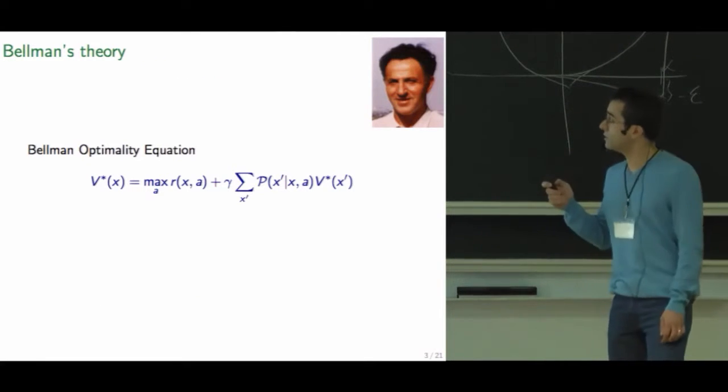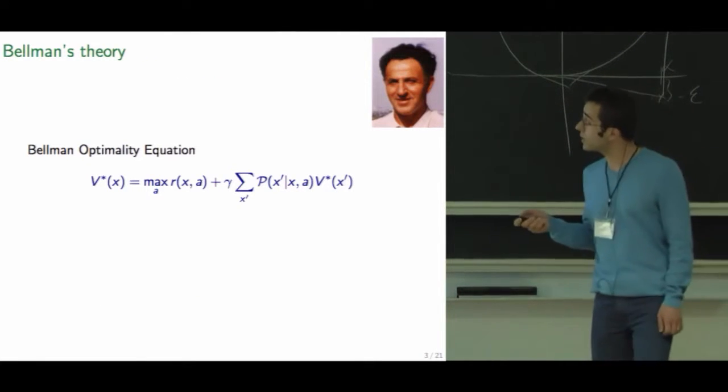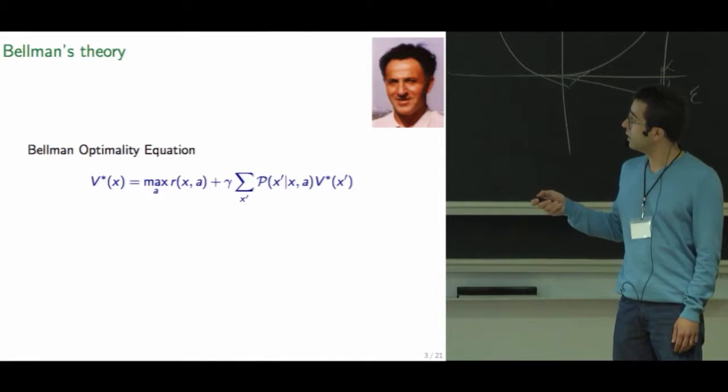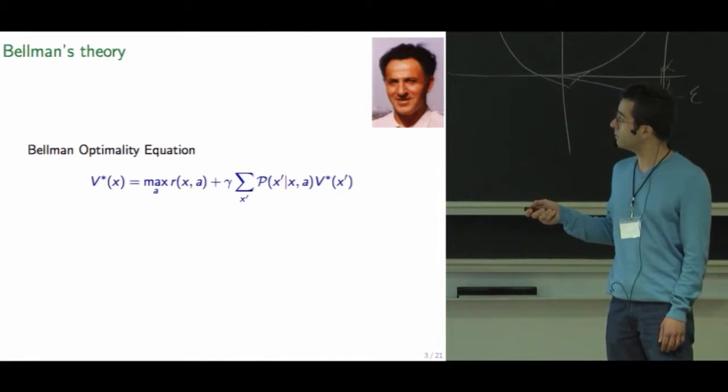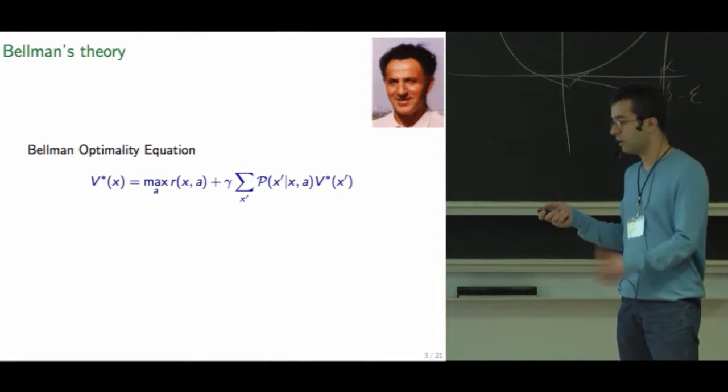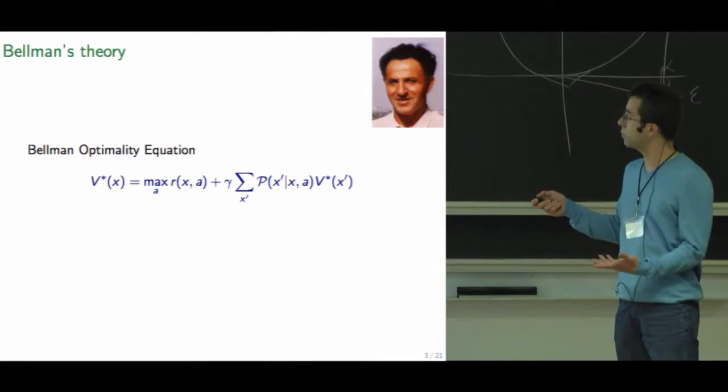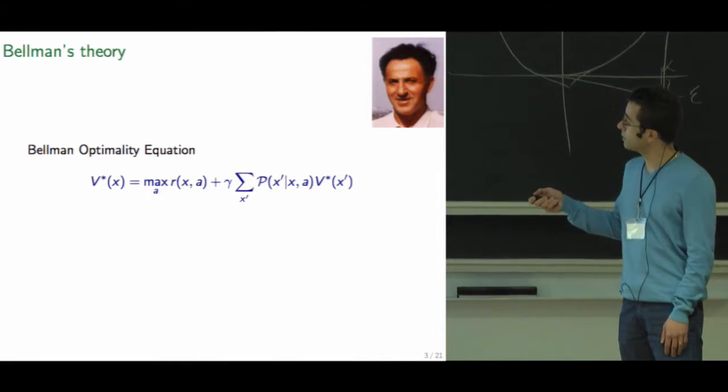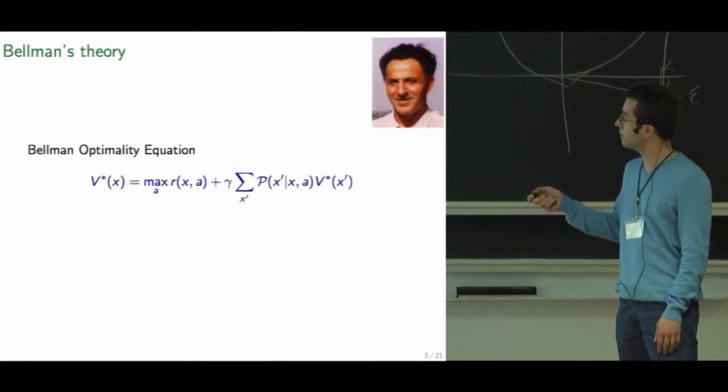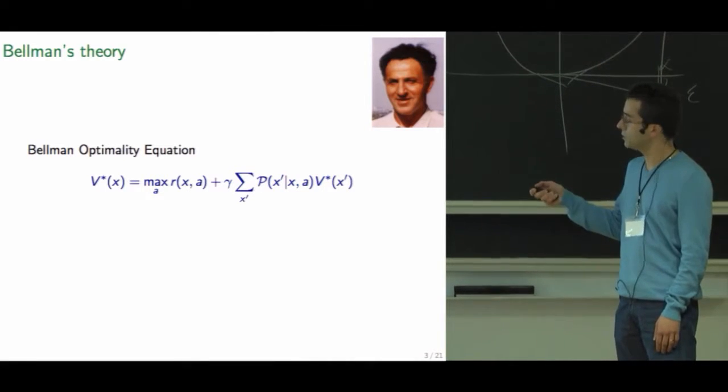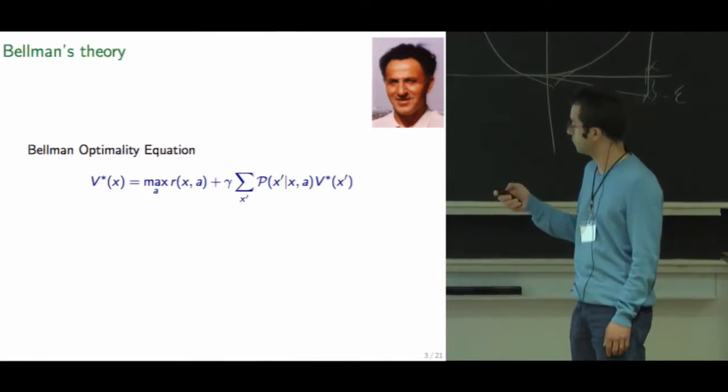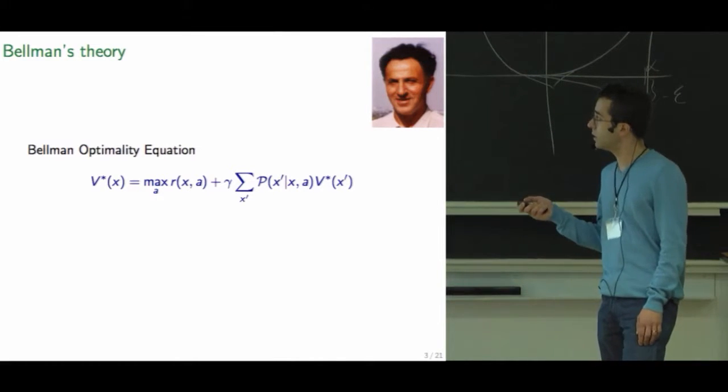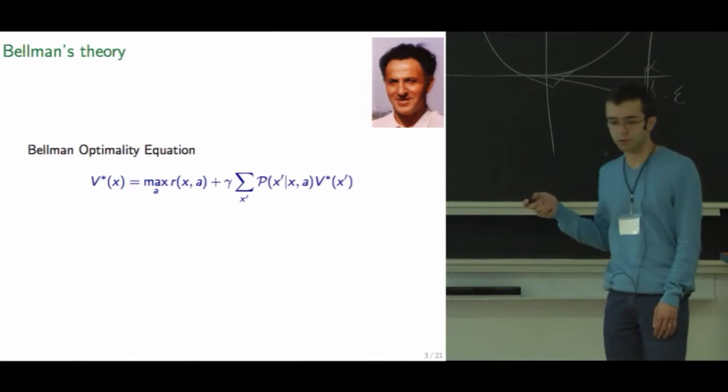So we know from Bellman's theory that we can quite concisely express the best that we can do in terms of collecting rewards. This is the optimal value function. It is the highest amount of reward that you could collect with any policy. And we can write it as simply the immediate reward plus some expectation over the next states of the optimal values of whatever you would get in the future. We are in a discounted, expected total discounted reward setting.